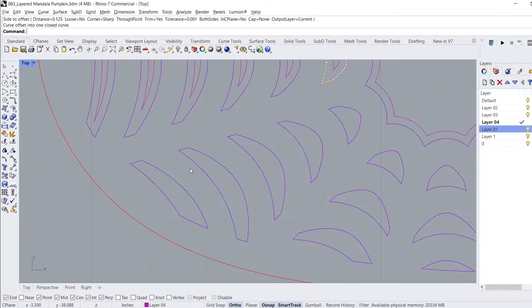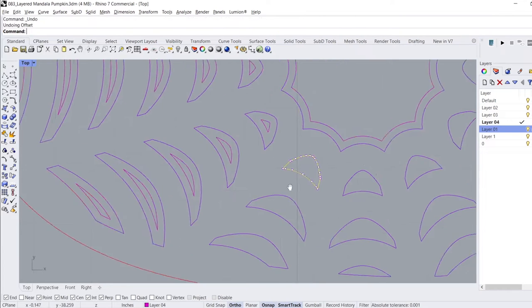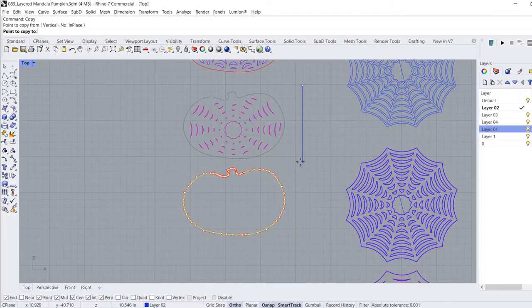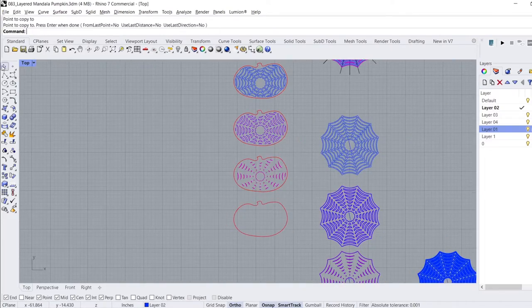I repeated this one more time to create three layers of the mandala. The last step was to delete everything except for the exterior outline of the pumpkin. This will be the base of the layered mandala art.